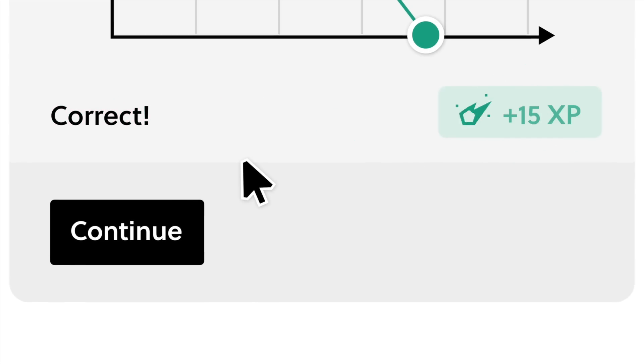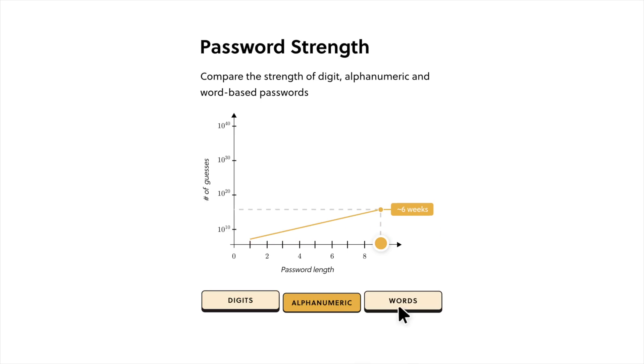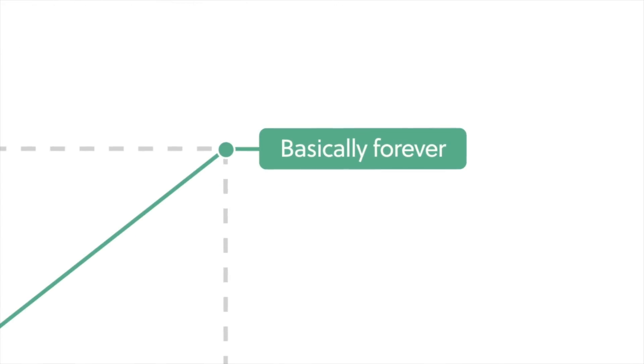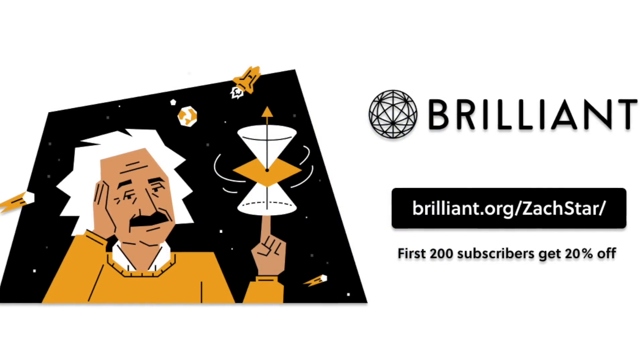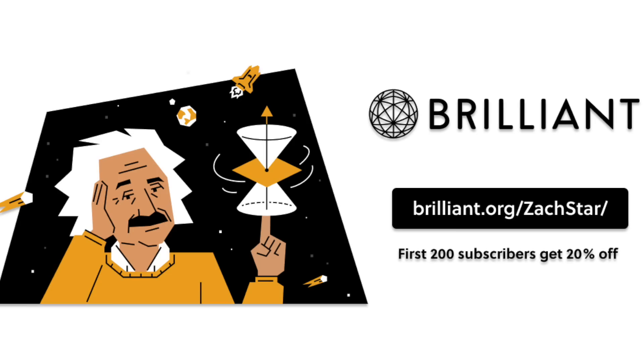And you can try everything Brilliant has to offer free for a full 30 days by just going to brilliant.org slash Zach Starr or clicking the link below, and the first 200 of you to sign up will get 20% off Brilliant's annual premium subscription.